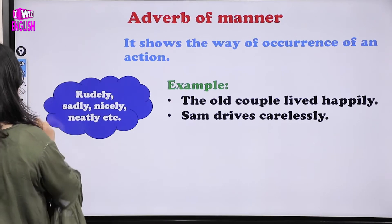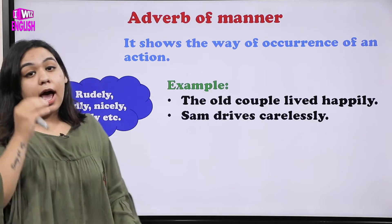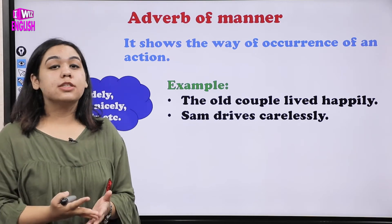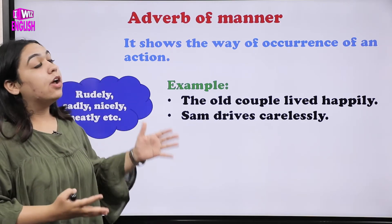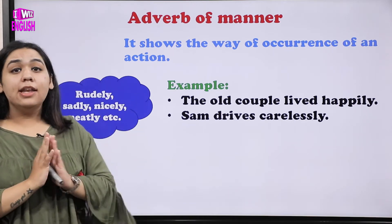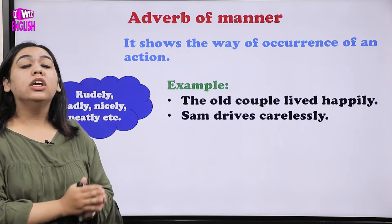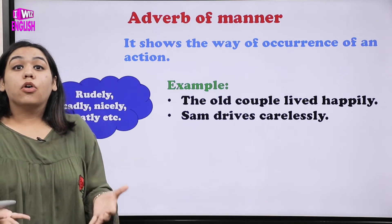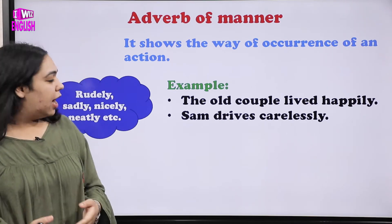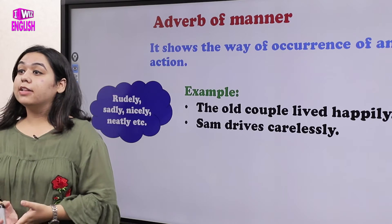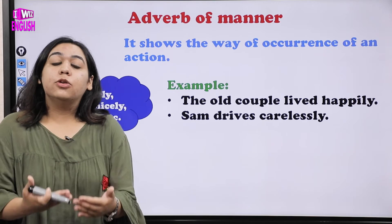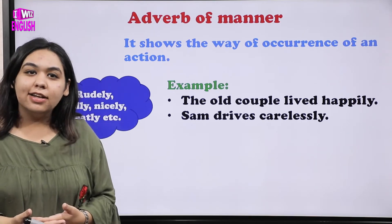The next type is adverb of manner. As the name suggests, this adverb tells you the manner — the way in which something is done. It shows how that action is occurring. For example: 'She talked to me rudely' — 'rudely' is the adverb of manner. Some examples are: sadly, nicely, carelessly — these describe the way something is done.